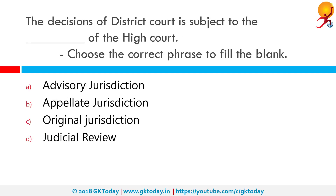The decisions of the district court are subject to the ___ of the high court. Choose the correct phrase to fill the blank. The correct answer is 'appellate jurisdiction.' Appellate jurisdiction is the power of a higher court to review decisions and change outcomes of decisions of lower courts. Most appellate jurisdiction is legislatively created and may consist of appeals by leave of the appellate court or by right.